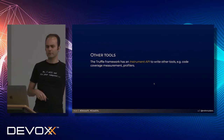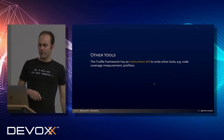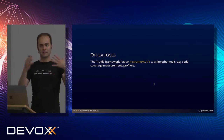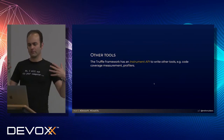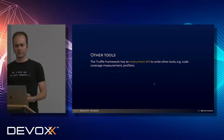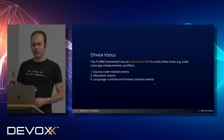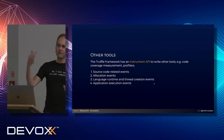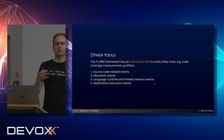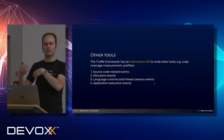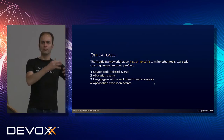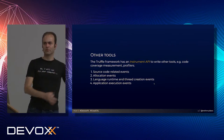You can write other tools as well using the Instrument API — the basic toolkit for writing any kind of tooling like code coverage measurement or profilers. There are four types of events the Instrument API can emit: source code being loaded, memory being allocated, language runtime or threads being created, and program execution — where you walk through the AST executing machine instructions and can pause execution.